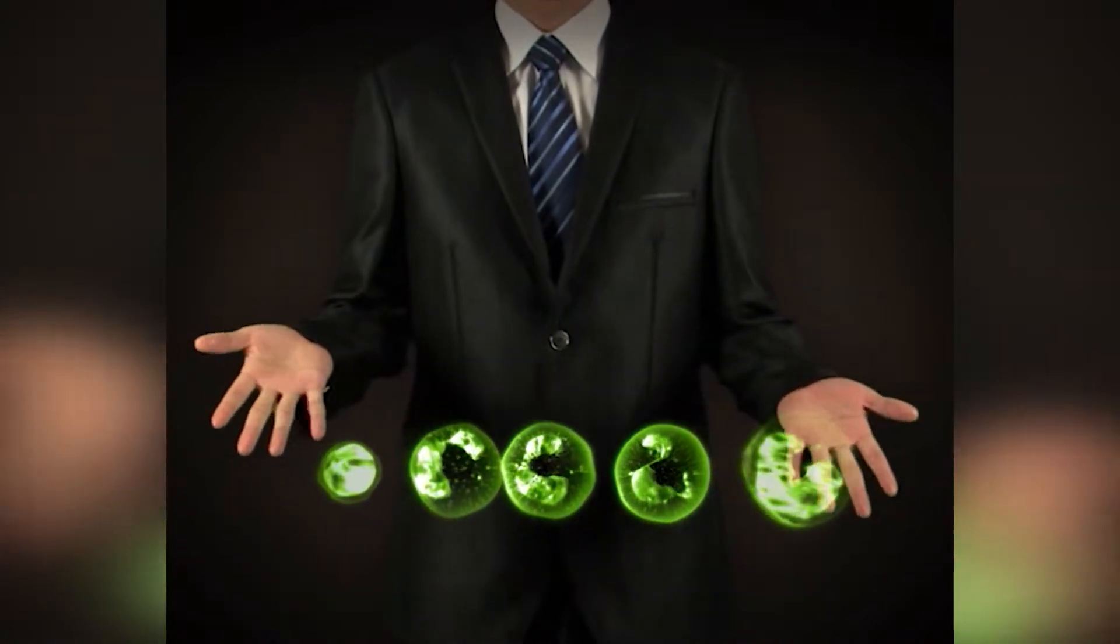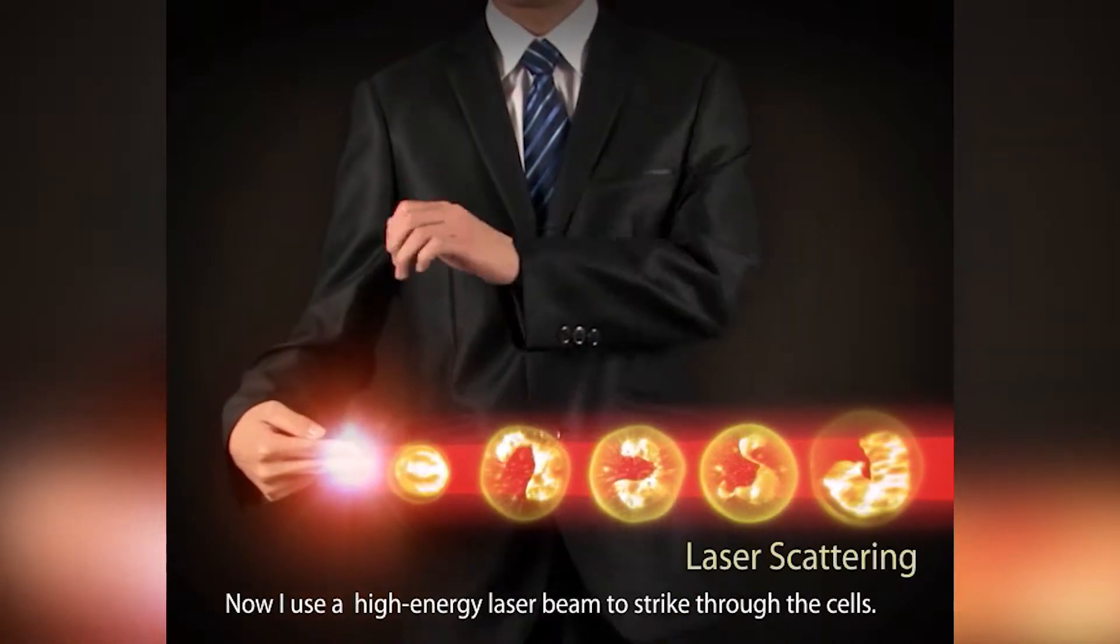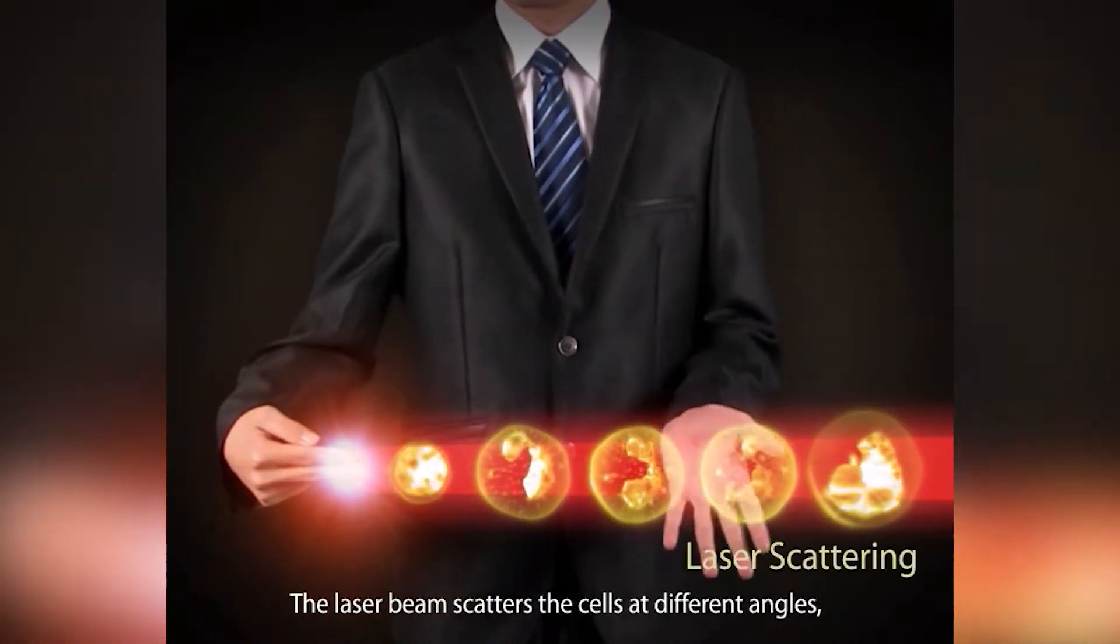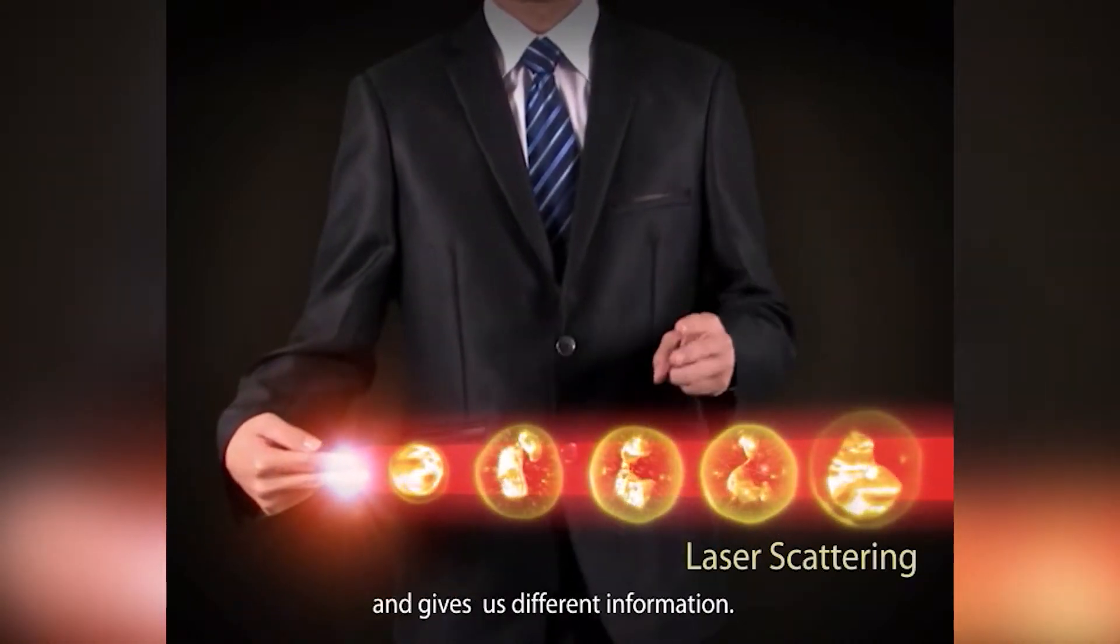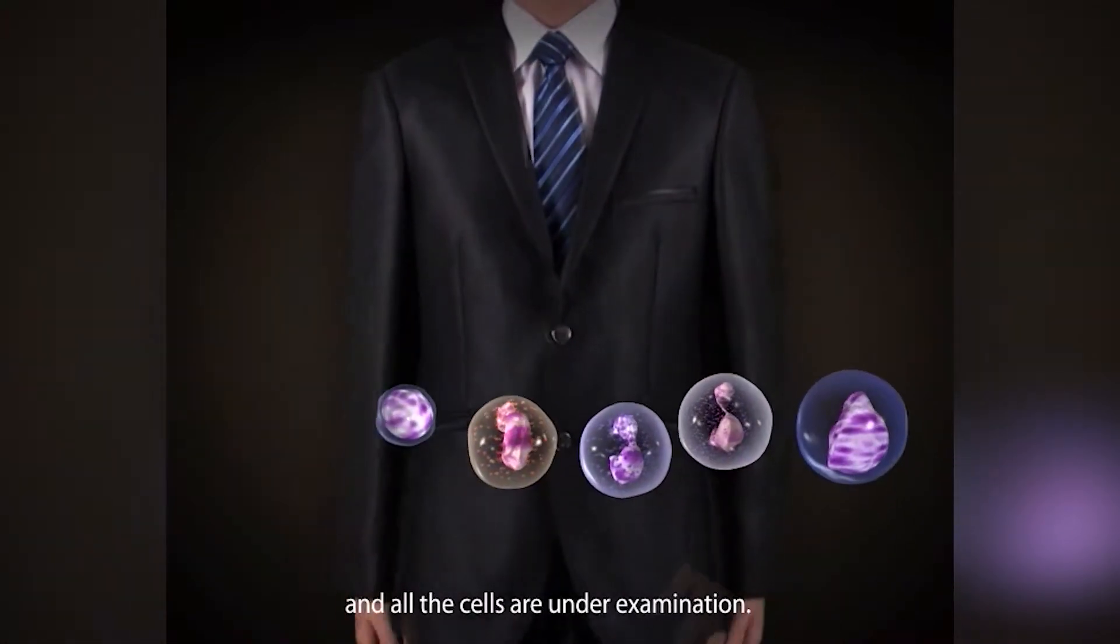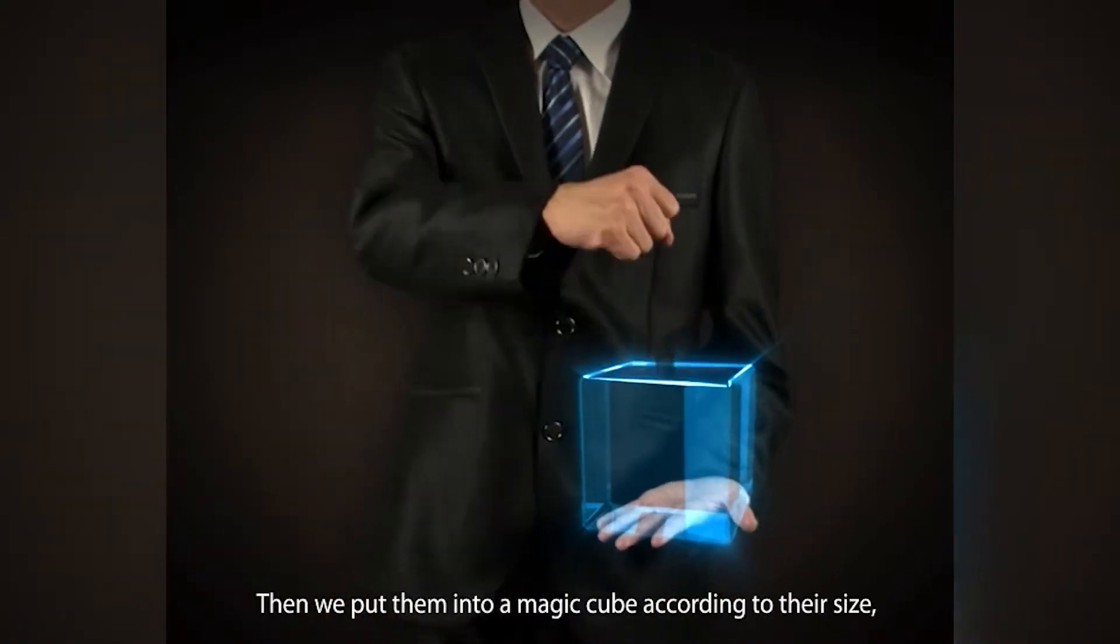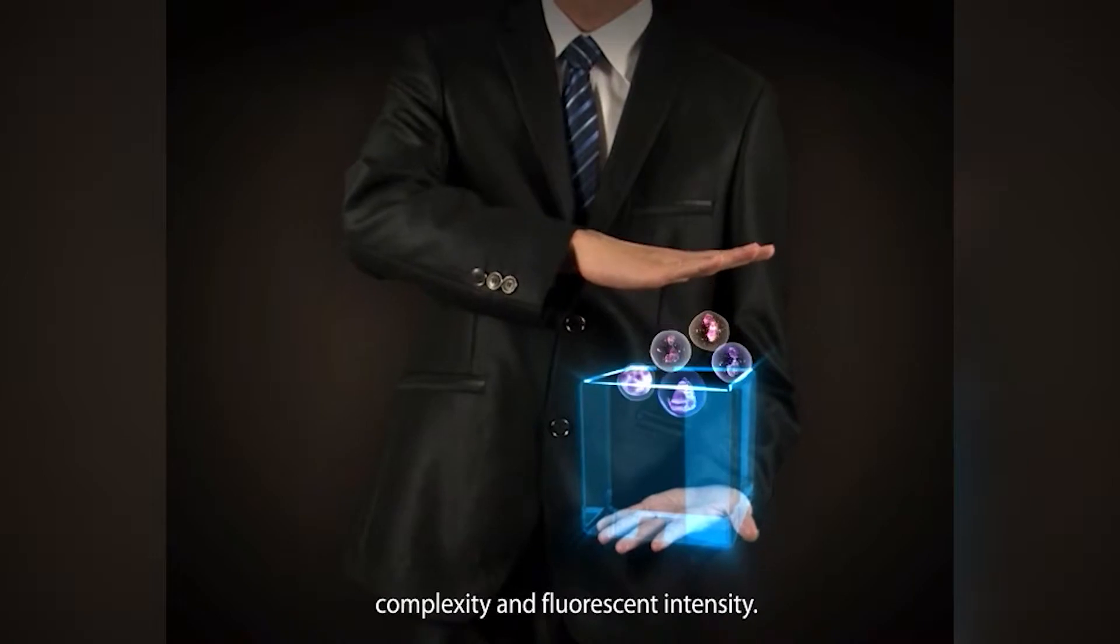Now I use a high energy laser beam to strike through the cells. The laser beam scatters the cells at different angles and gives us different information. The laser and fluorescence encounter, and all the cells are under examination. Then we put them into a magic cube according to their size, complexity, and fluorescent intensity.